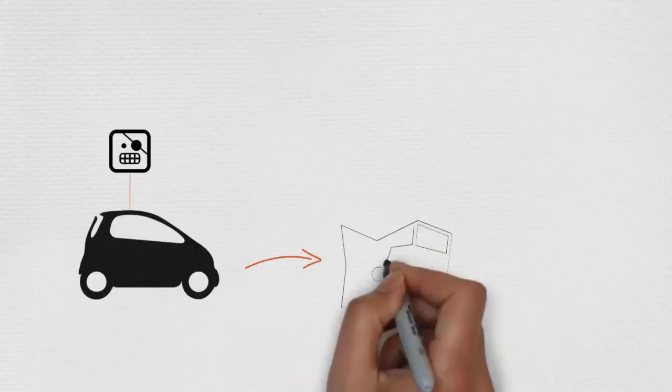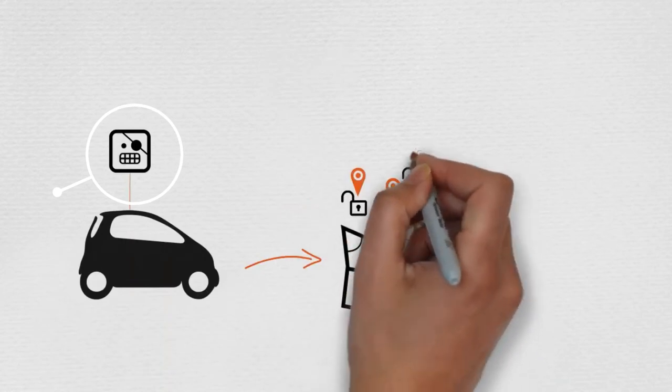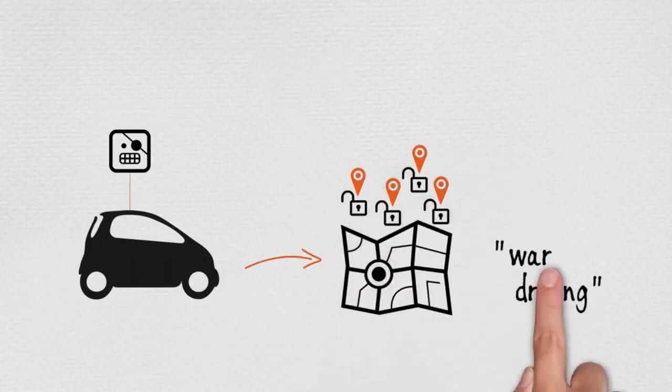Vulnerabilities in these devices may also allow cyber criminals to search and locate these smart locks while driving around a city, known as war driving.